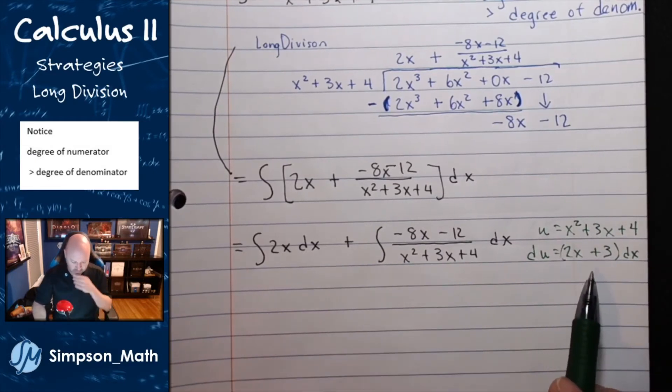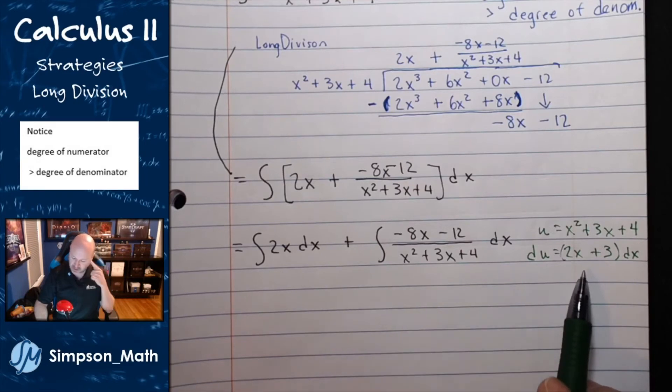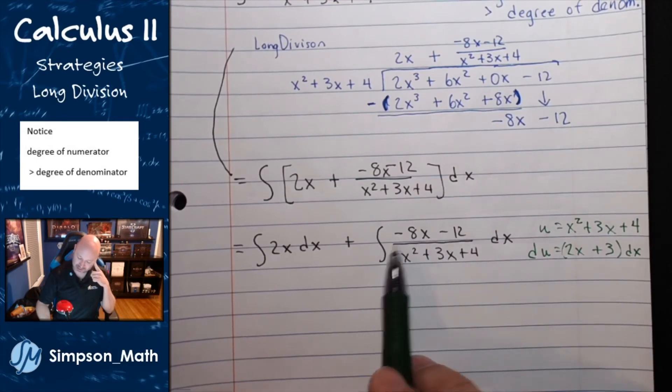Now, let's see. I really need that 2x to jump up to a negative 8x. I could do this.